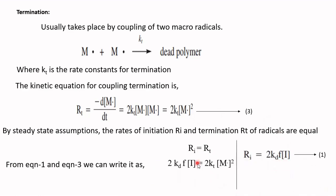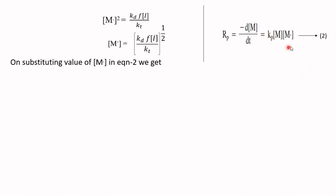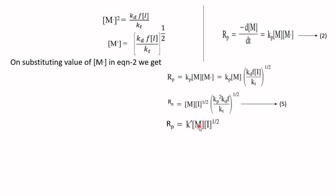From equations 1 and 3, substituting the values of r_i and r_t and rearranging, we get an expression for [M•]^2, and we find that [M•] equals the square root of (k_d·f·[I] / k_t). This expression for [M•] is then substituted into equation 2 for r_p.